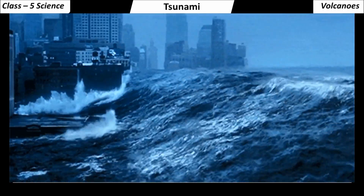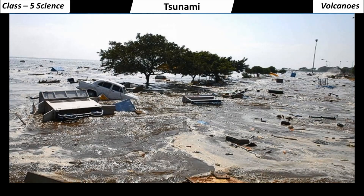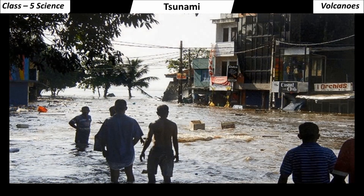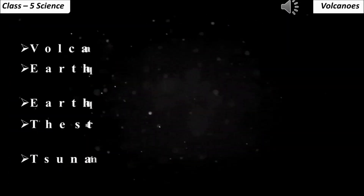The tsunami in 2004 was caused by an earthquake in the Indian Ocean. A lot of people in the coastal areas of Tamil Nadu and Kerala died in this disaster. It also devastated the Andaman and Nicobar Islands and the islands of Indonesia. Sri Lanka was also affected.